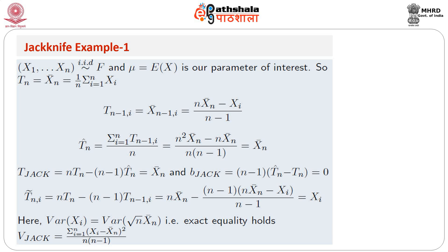Also in this case, T̃_{n,i} = n·T_n − (n−1)·T_{n−1,i} = x_i, and Var(x_i) = Var(√n · x̄_n), which holds exactly here. The jackknife variance estimator comes out to be (1/n)·(1/(n−1)) · Σ_{i=1}^{n} (x_i − x̄_n)², which is the same as the traditional bootstrap variance.